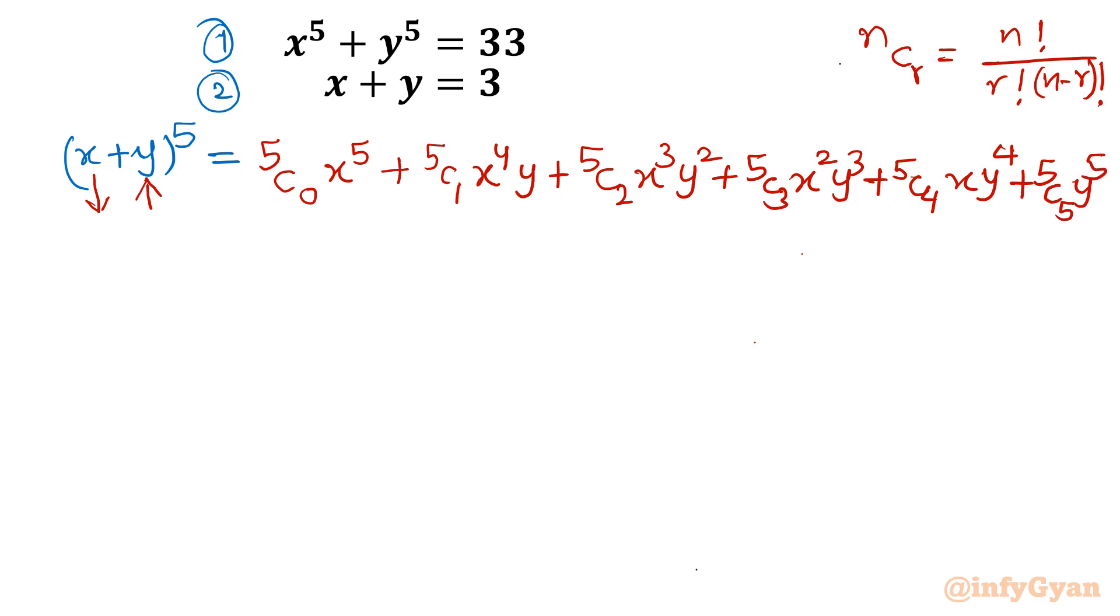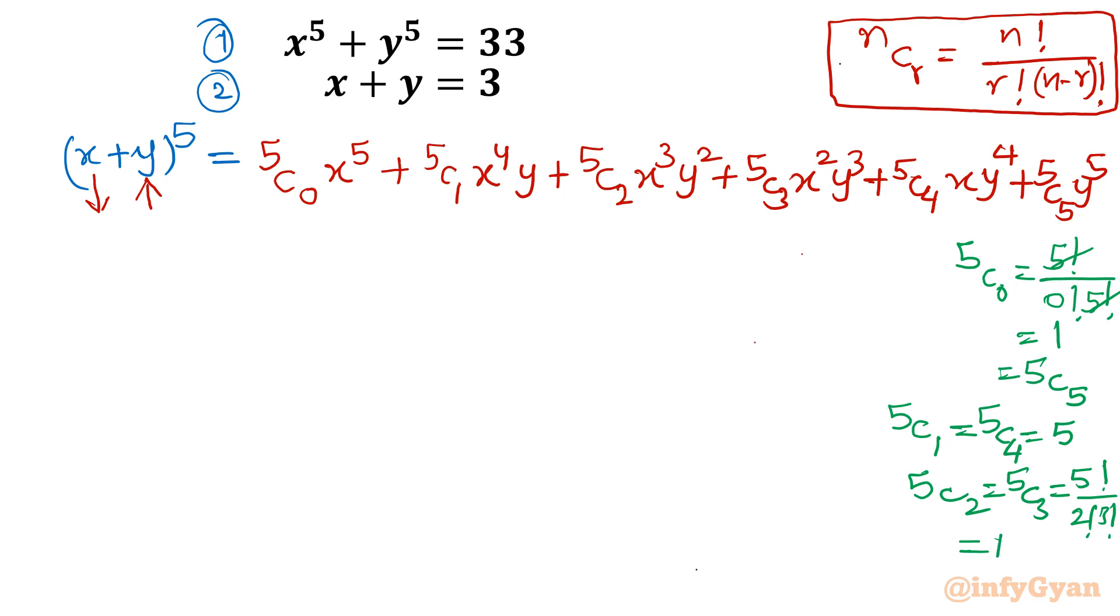Now values. Using this standard formula we will find out 5c0, 5c1, 5c2 and 5c5. So 5c0 is 5 factorial over 0 factorial times 5 factorial, that value will be 1, which will be equal to 5c5. Same thing ncr, ncn-r both values are same. Similarly 5c1 equal to 5c4, that value would be 5. And one last value is 5c2 and 5c3, that is 5 factorial over 2 factorial into 3 factorial, so that value would be 10.